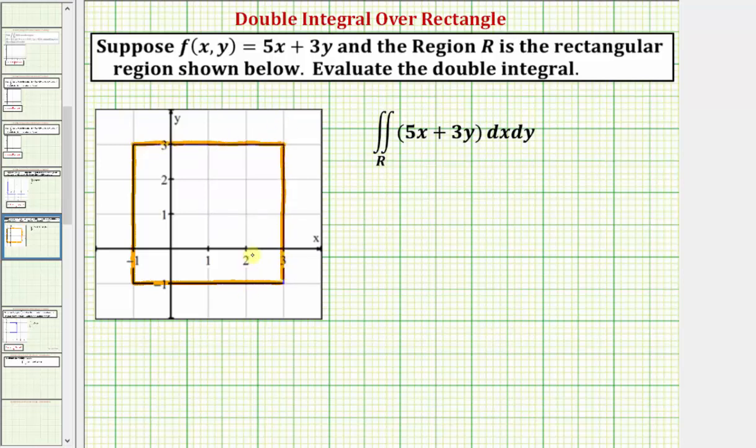In our previous examples, the given function was non-negative over the region of integration, and therefore the double integral was the volume of a solid. This is not the case in this example. This function is negative in portions of this region of integration. Let's take a look at this graphically.